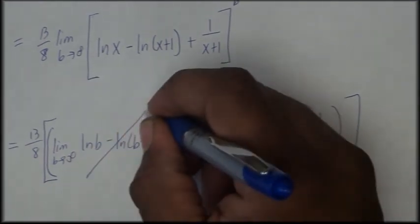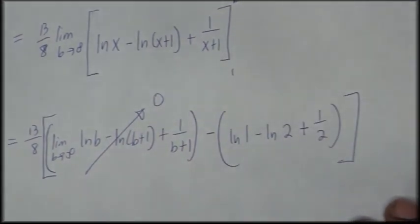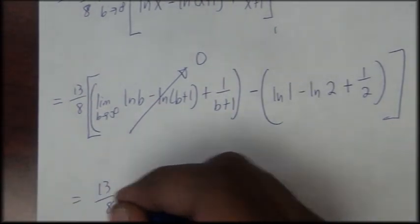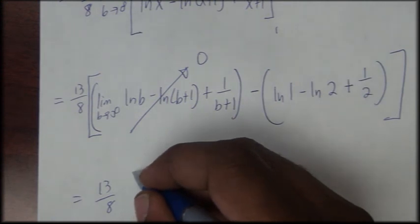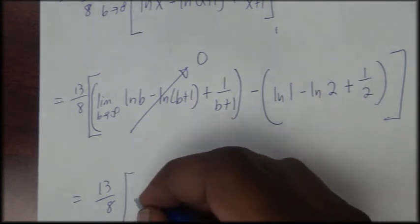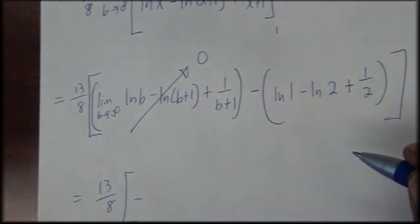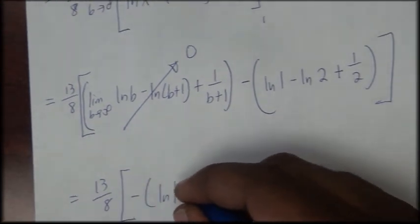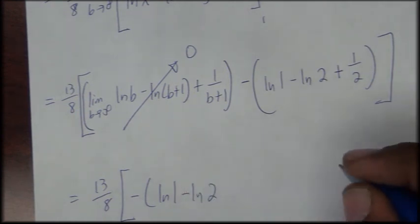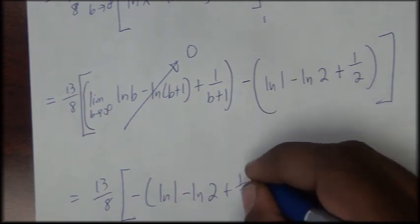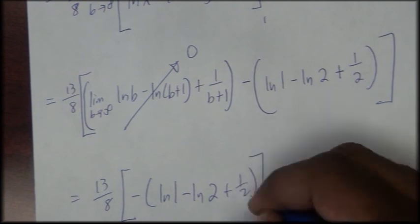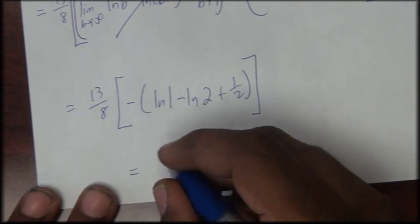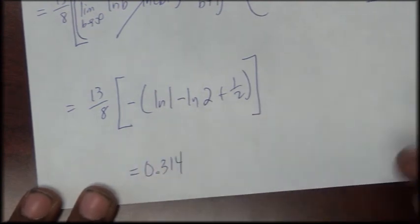If we evaluate our limit, it approaches 0. So we have 13 over 8 times negative natural log of 1 minus natural log of 2 plus 1 half. Once you simplify this on your calculator you should get 0.314.